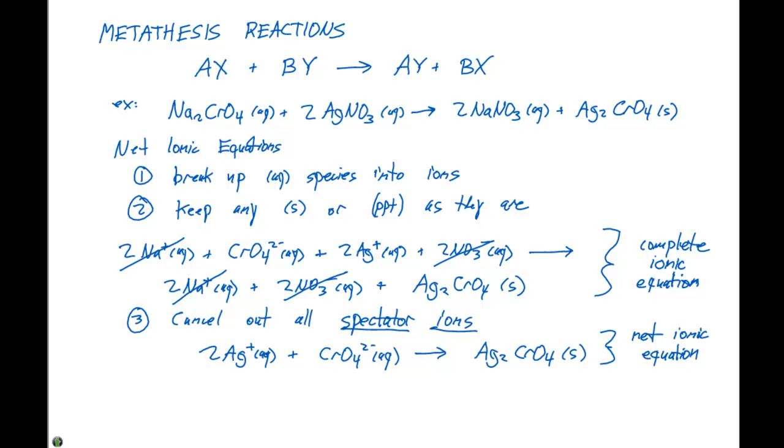And we use these net ionic equations for a couple things. Number one, the net ionic equation generalizes the reaction. So in general, we can say that any solution that contains silver plus ions and chromate two minus ions will form a precipitate, so we can look at it in that way.